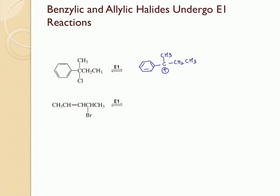Here you can see that this is our alpha carbon and here are our two beta carbons. Abstracting any one of these hydrogens should give us the products, but we have to remove the hydrogen from the carbon which has the fewest number of hydrogens, so we are going to remove from here.